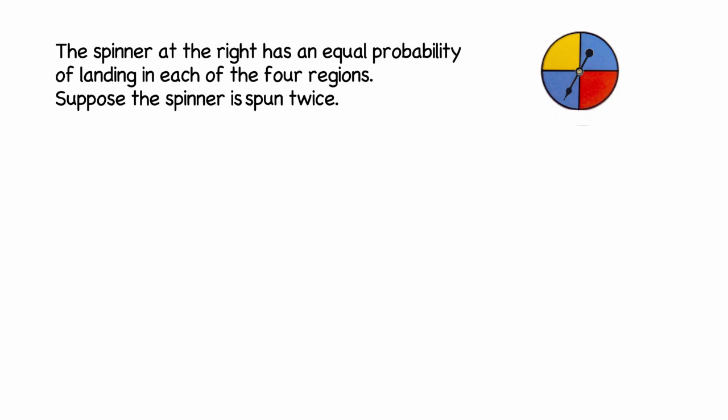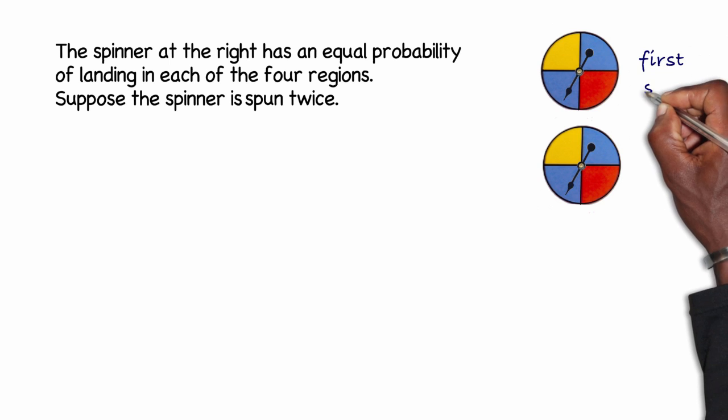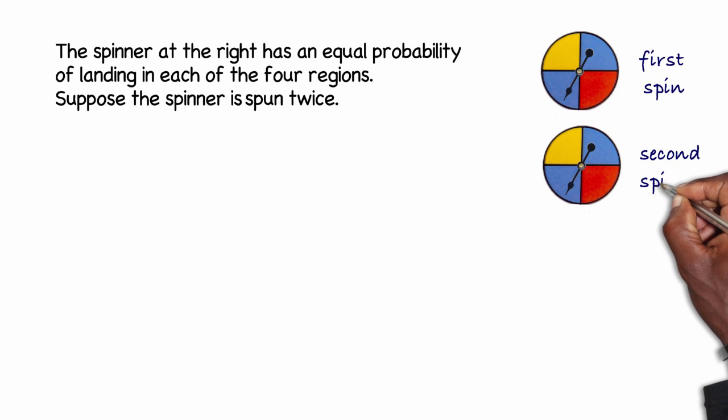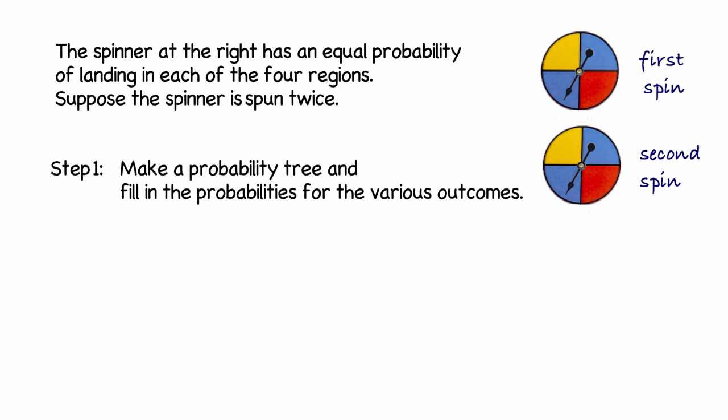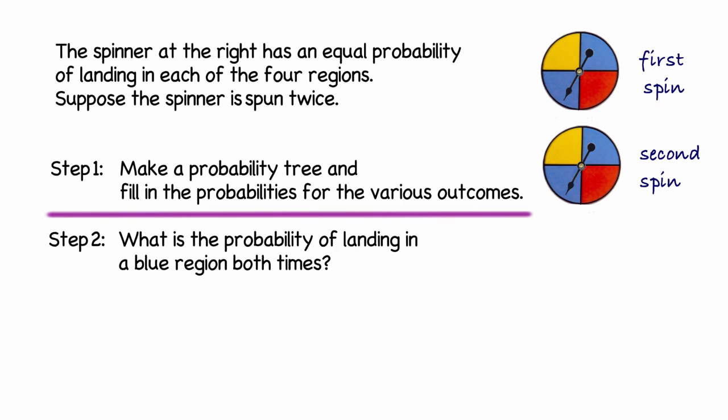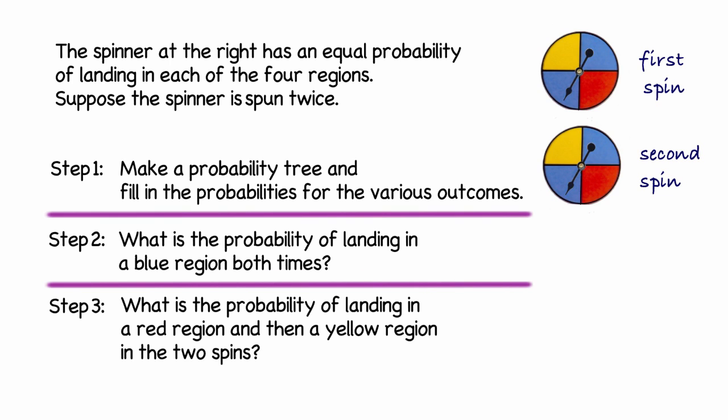We're going to be spinning this spinner twice, which is why we'll have two diagrams — one that represents the first spin and one that represents the second spin. They're asking us to execute three steps: make a probability tree to find the probabilities for the various outcomes, find the probability of landing in a blue region on both spins, and in step three, find the probability of landing in a red region first and then a yellow region second.